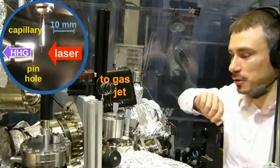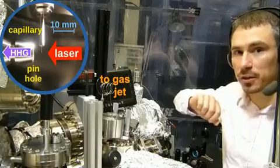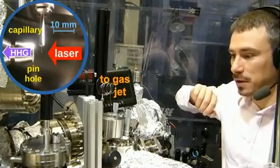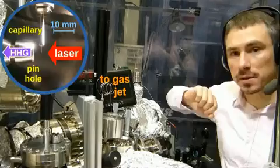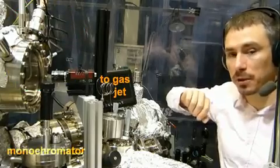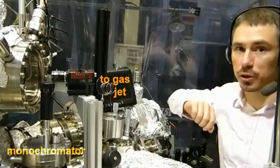There, the generation of the high order harmonic light takes place. Afterwards, there is a monochromator with a toroidal grating where we can select the energy to do photoemission.